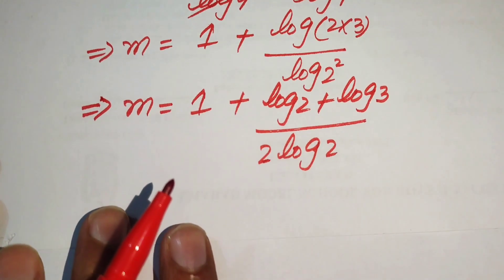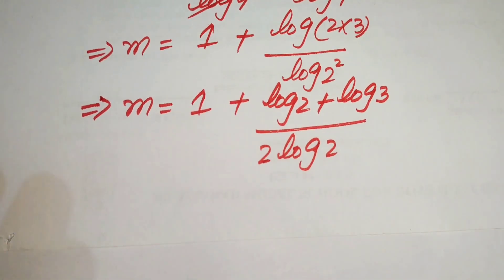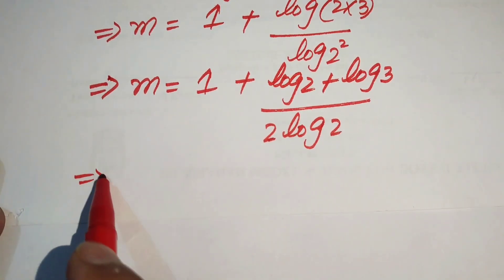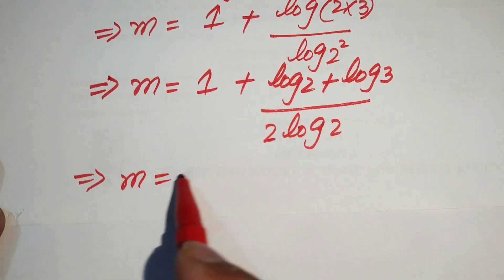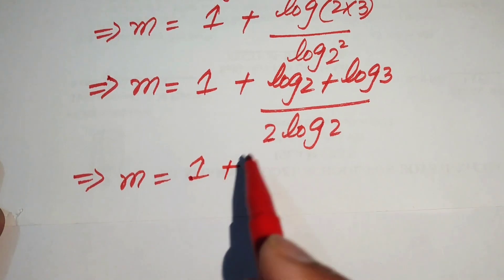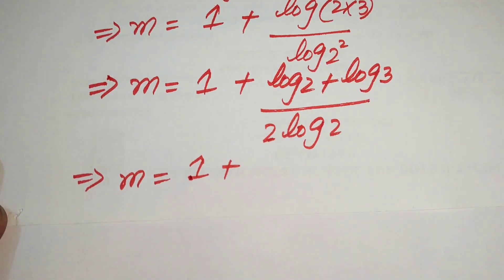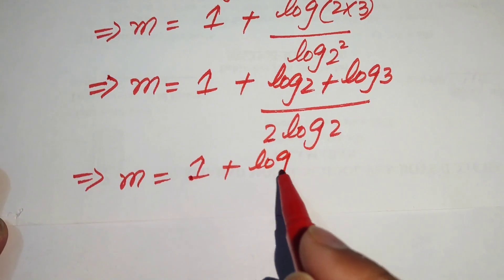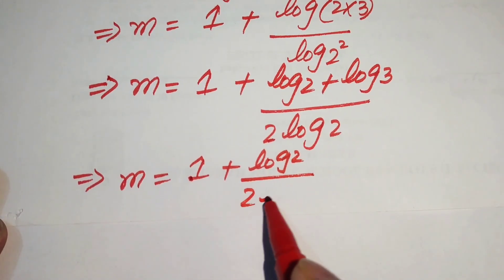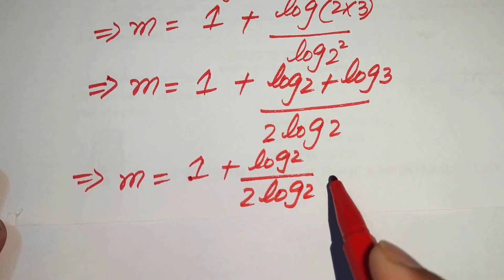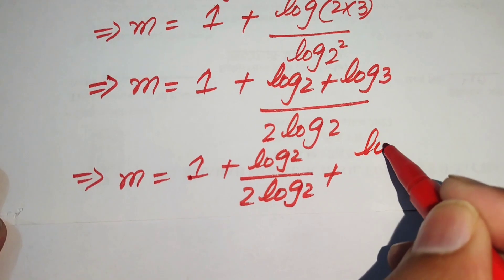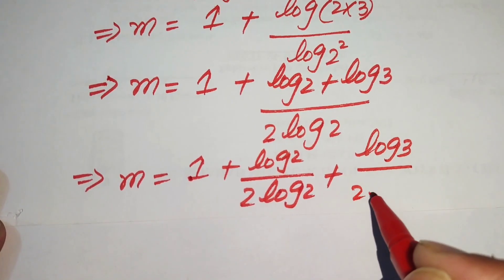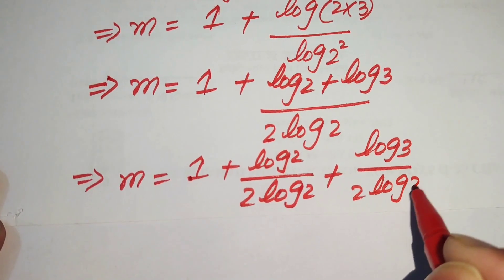After this step, we need more simplification. We break this fraction again, and it is written as m is equals to 1 plus log of 2 divided by 2 times log 2, plus log of 3 divided by 2 times log 2.